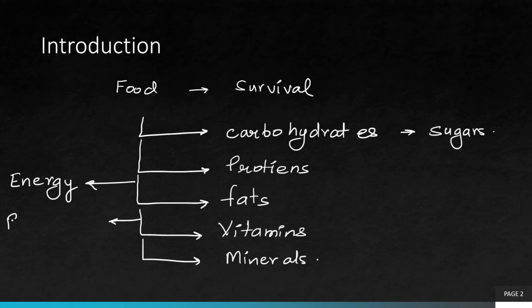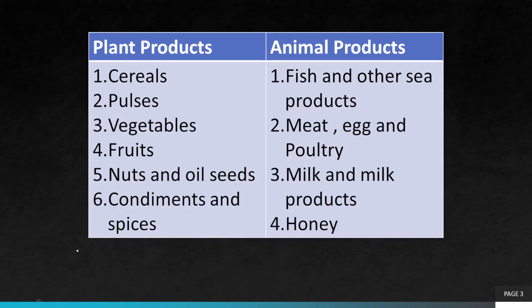So food gives us two things: energy, and raw materials for body development, growth and health. There are two major sources of food — plants and animals. So far there are only a few hundred varieties of plants, and there are only 20 animal species which have been domesticated for the purpose of food production.